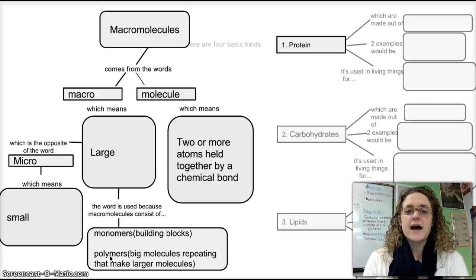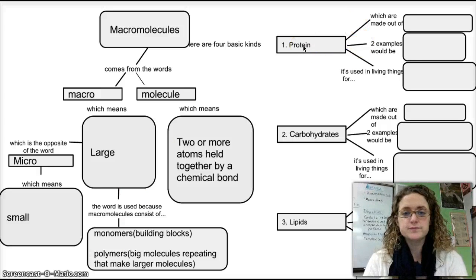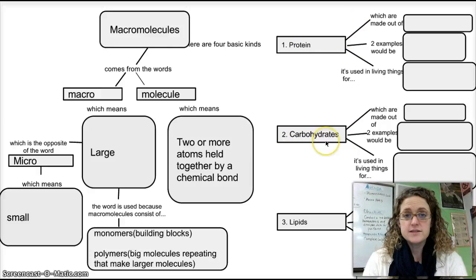We're going to look at three main types of macromolecules today. We're going to look at proteins, what they do, how they're structured, carbohydrates, what they do and how they're structured, and lipids.